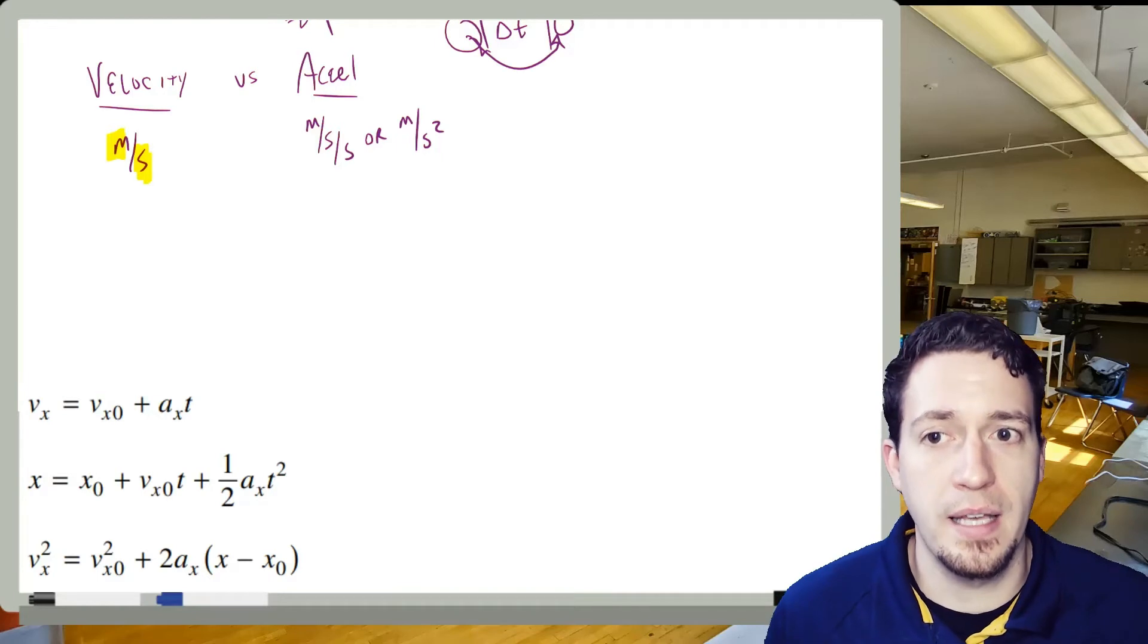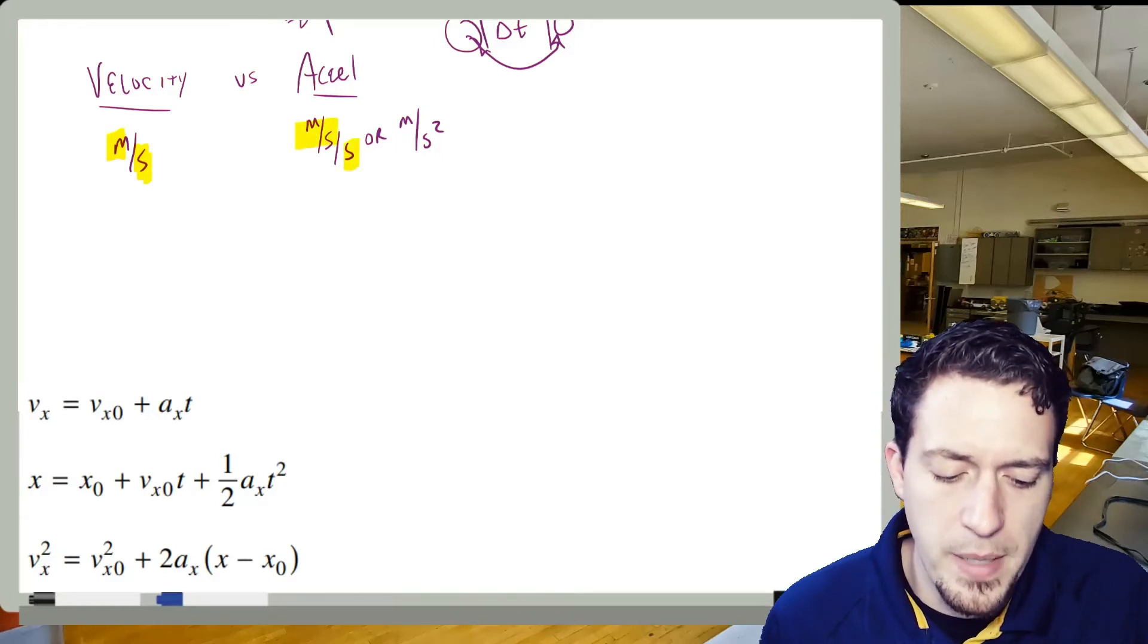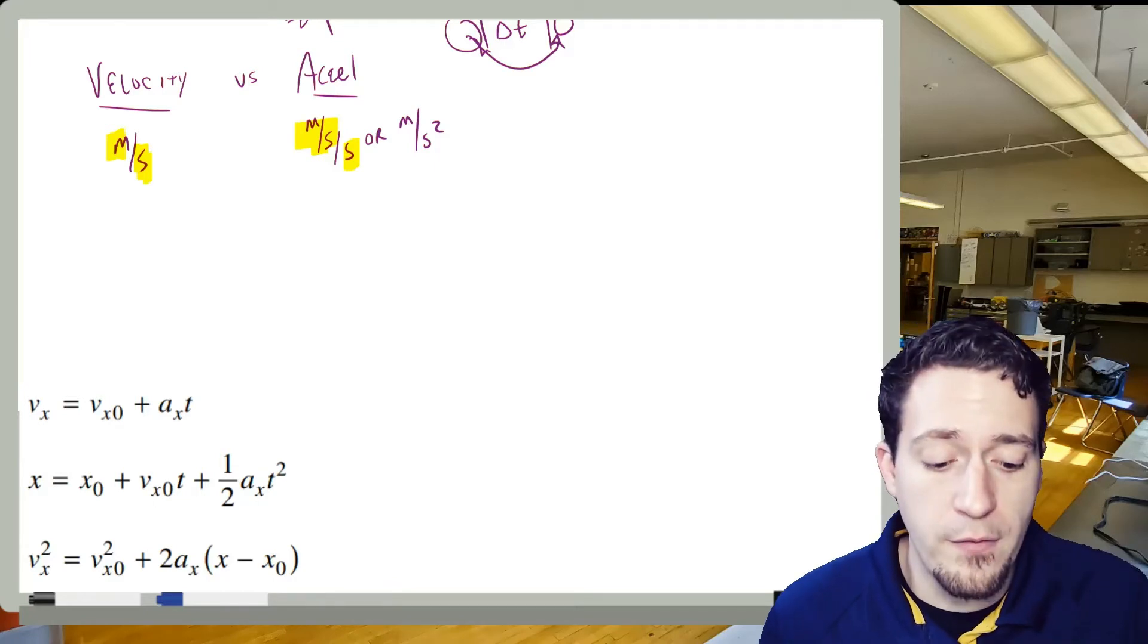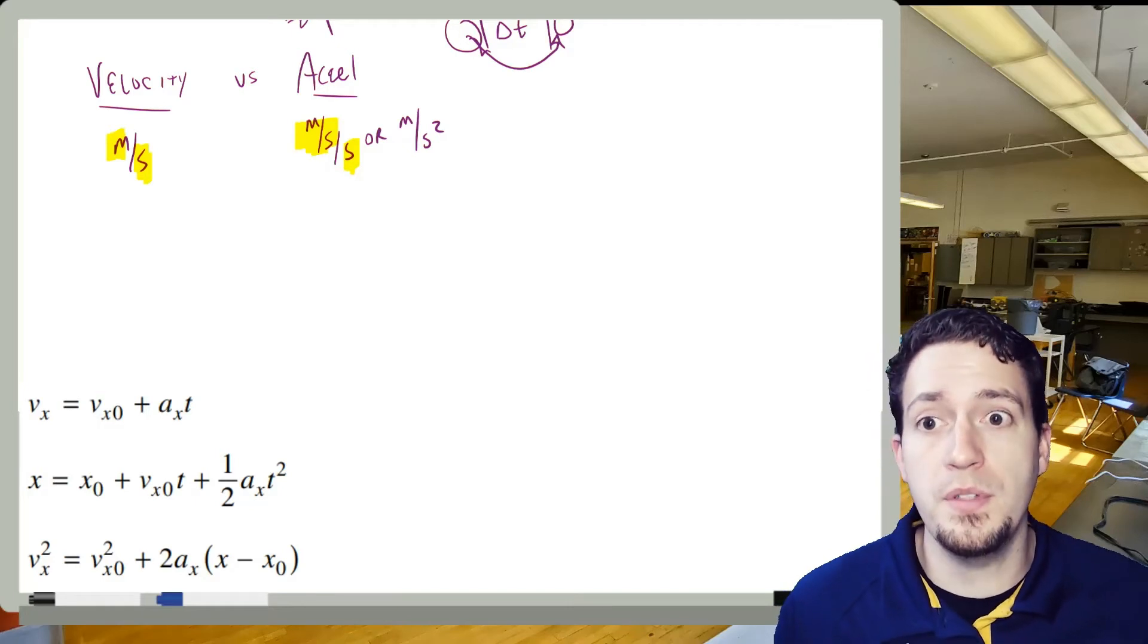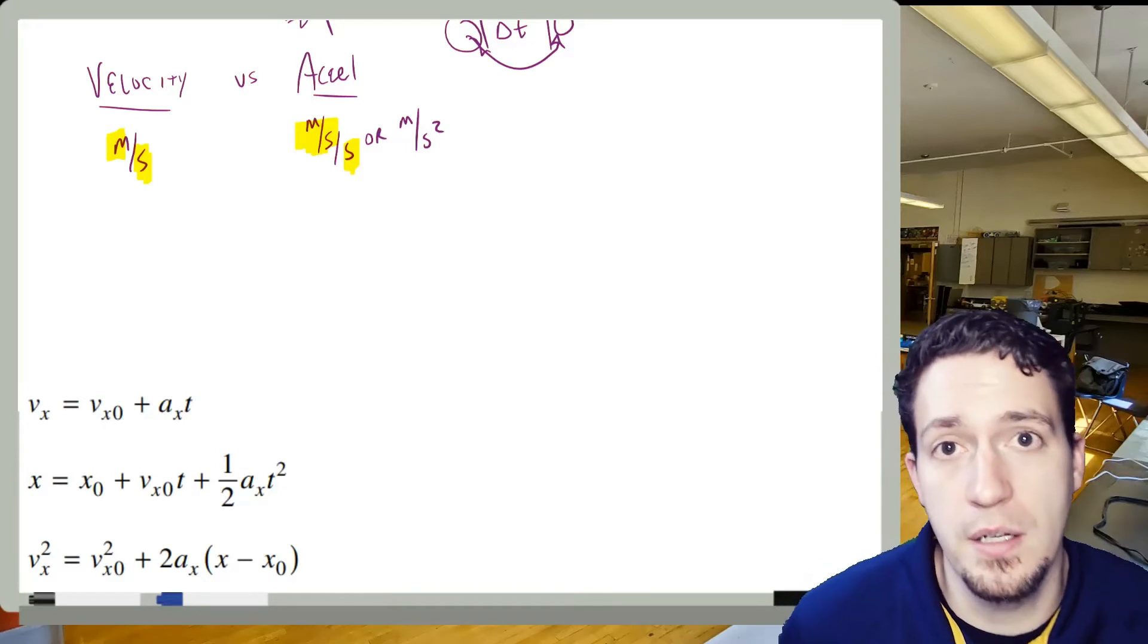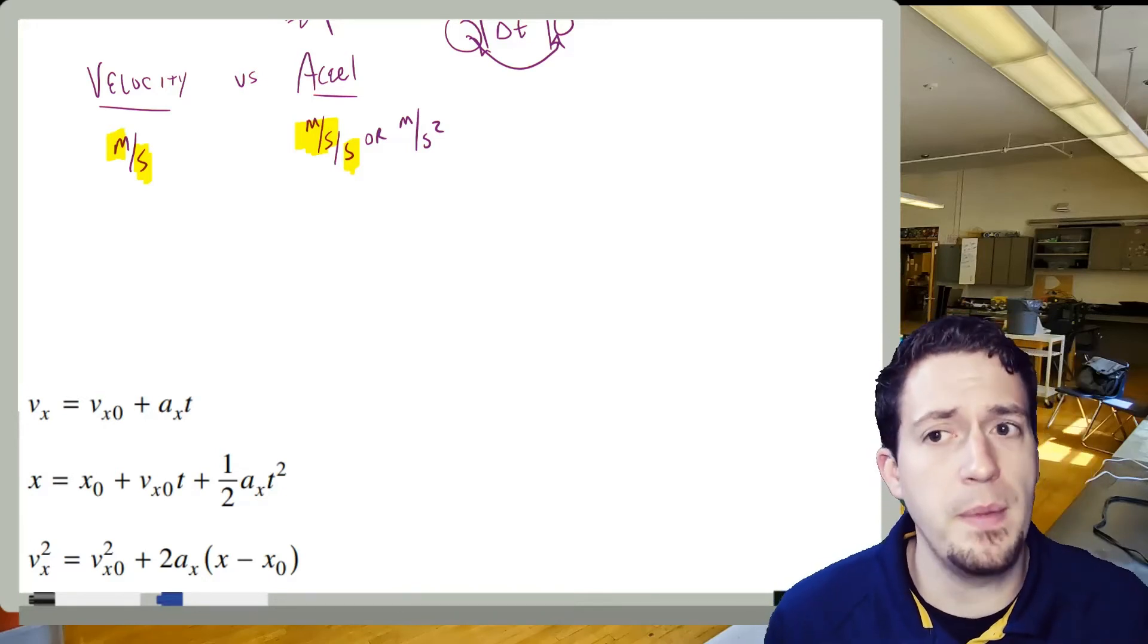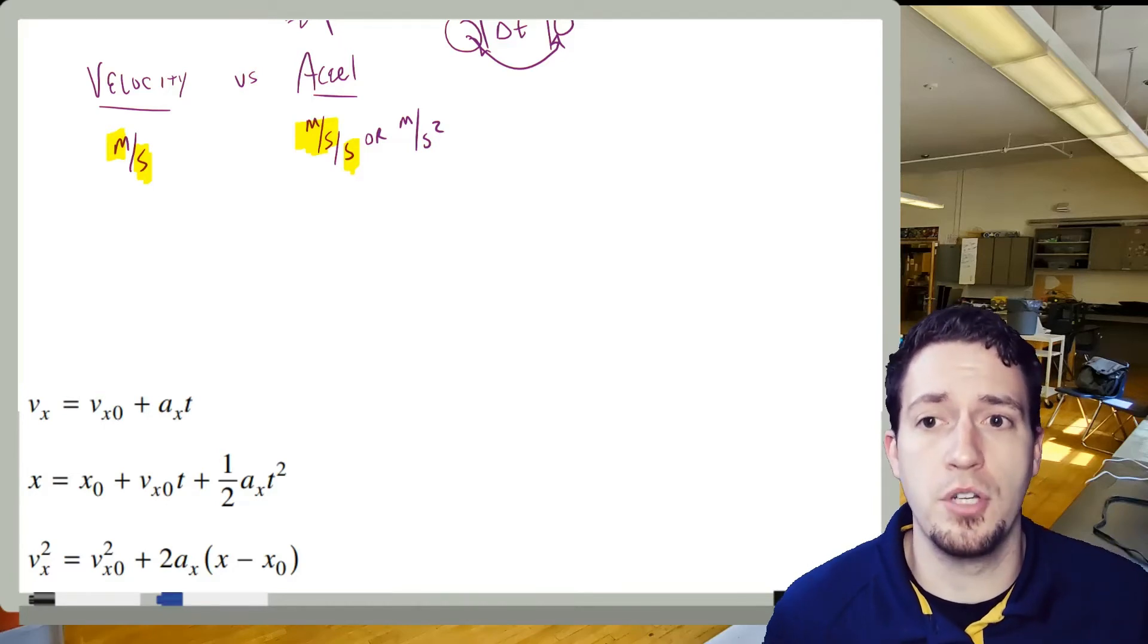But if we look at something like acceleration, for every second, it's how much the meters per second change. If I were to say that a little bit more carefully, for every second, how much the velocity changes. So we see that acceleration is a change in velocity and velocity is a change in displacement or distance. So you see sort of a fundamental difference for this. Velocity is how it's moving and acceleration is how that motion is changing.